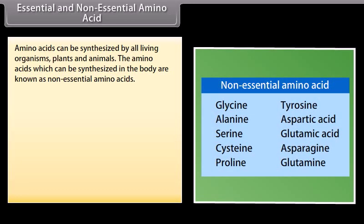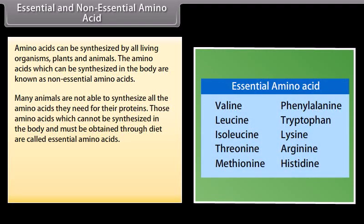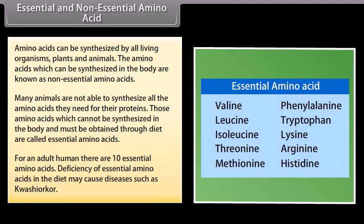Essential and non-essential amino acids: Amino acids that can be synthesized in the body are known as non-essential amino acids. Those which cannot be synthesized in the body and must be obtained through diet are called essential amino acids. For an adult human there are 10 essential amino acids. Deficiency of essential amino acids in the diet may cause diseases such as Kwashiorkor.